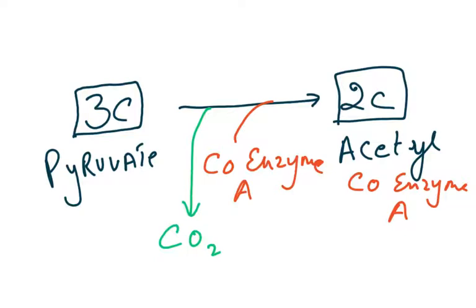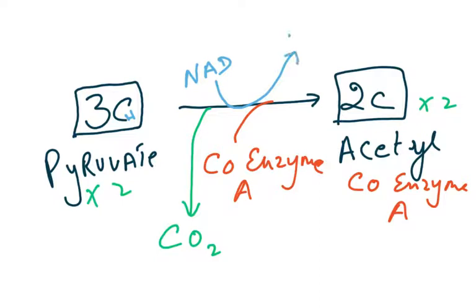This happens twice because we had two pyruvates, so we produce two acetyl-CoA. During this time, hydrogen is also removed from the pyruvate — that means dehydrogenation takes place. The hydrogen is given to a coenzyme called NAD, and NAD is converted to NADH, or reduced NAD.